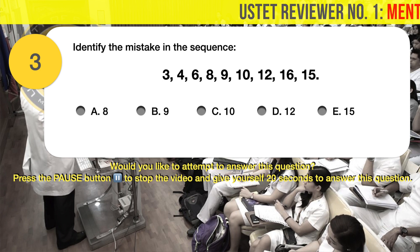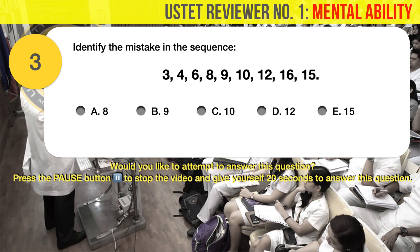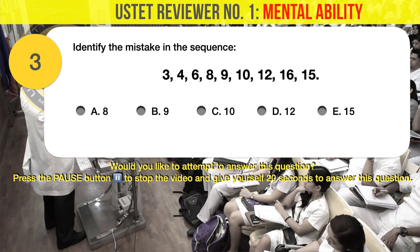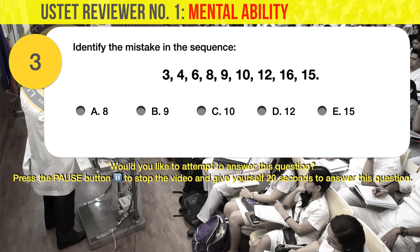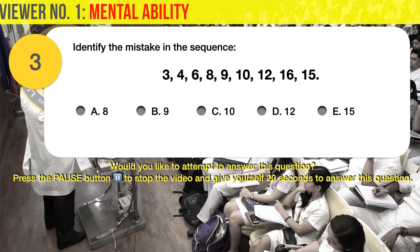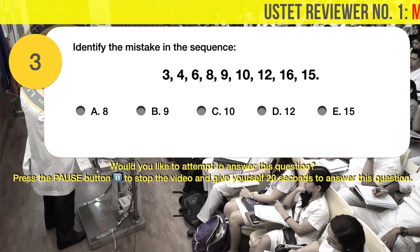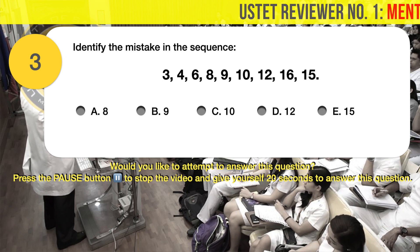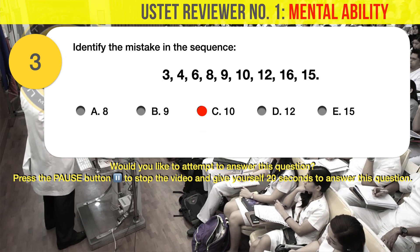Question number 3. Identify the mistake in the sequence: 3, 4, 6, 8, 9, 10, 12, 16, 15. A. 8, B. 9, C. 10, D. 12, E. 15. The correct answer is C. The mistake in the sequence is the number 10.